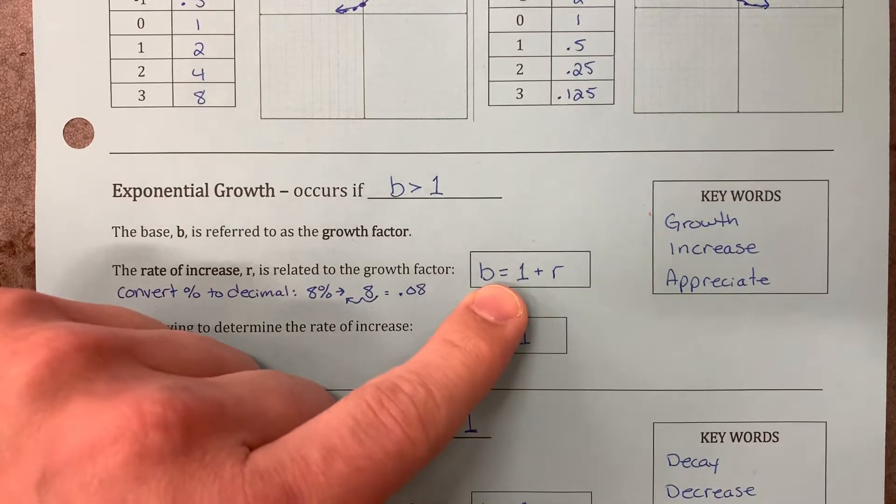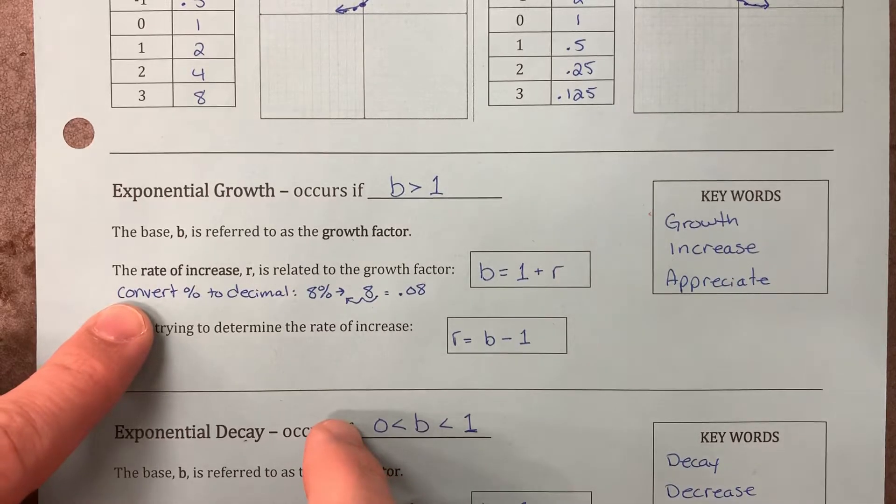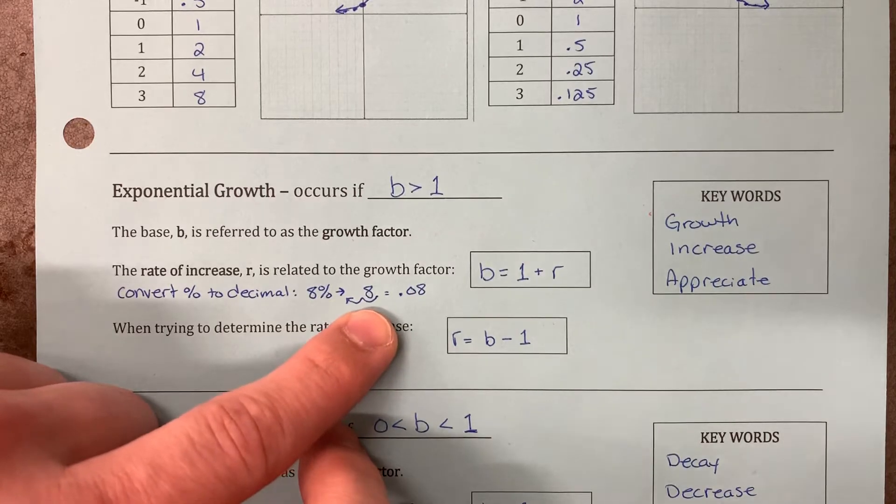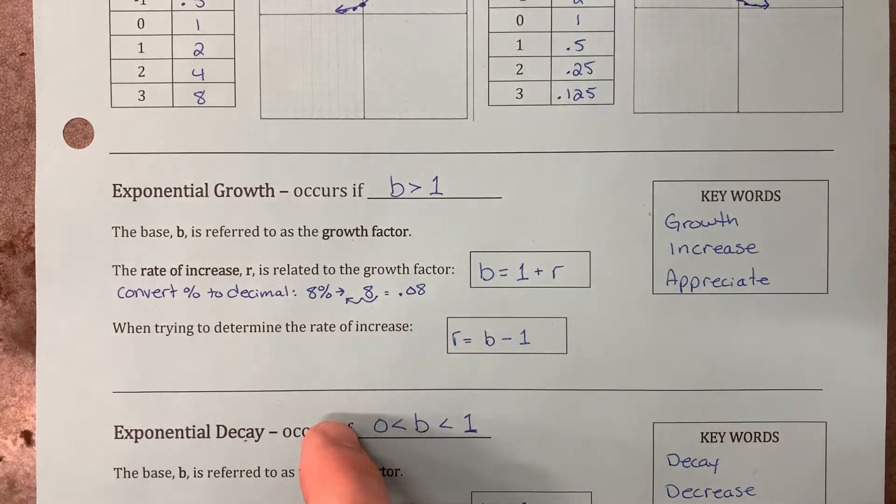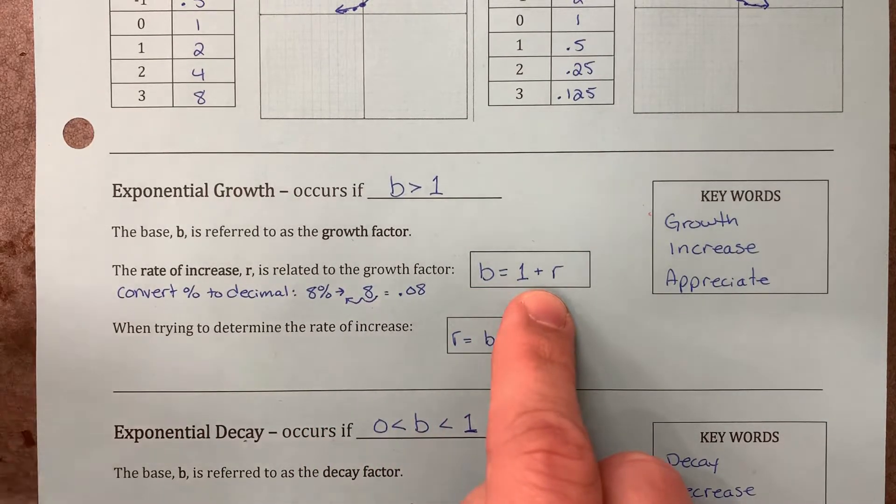How do we actually make the b value? Well, first, we're going to have to take whatever the percentage rate is, the rate of increase, and we're going to convert it to a decimal. We're going to bump that decimal over two places. It's always two places. So, 8% will become 0.08. And then we would say, 1 plus 0.08, that means your b value is 1.08.